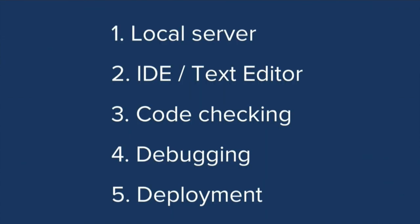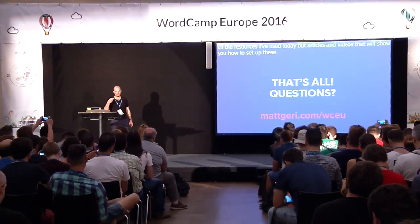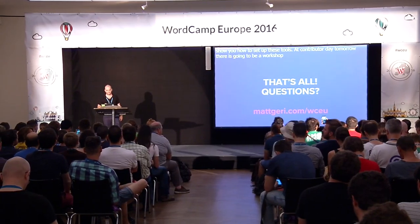To recap: we need a virtualized local server, an IDE or text editor that lets us write more code with fewer keystrokes, code checking as we write, breakpoint debugging, and deployment using something like WP Pusher. I've put a URL on the slide — mattjerry.com/WCEU — which lists all the resources I've talked about today plus articles and videos showing how to set up these tools. Tomorrow there's also a workshop on setting up VVV if you're interested. Any questions?